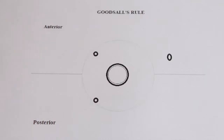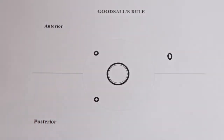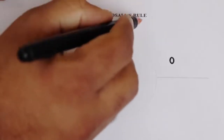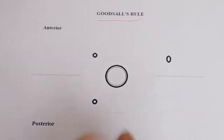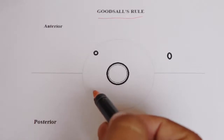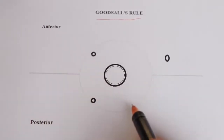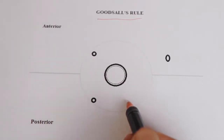Hi everyone, this is Dr. Pravinas Patil here. Today we will discuss Goodsall's rule. David Henry Goodsall was born on 4th January 1843 and died on 14th September 1906. While writing a topic on diseases of the anus and rectum, he mentioned a rule that explains the relation between the external opening of the fistula and the internal opening of the fistula. That rule is named after him — Goodsall's rule.